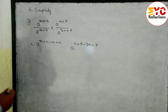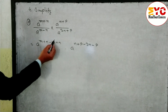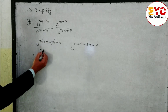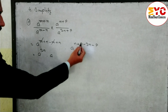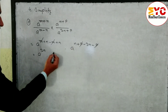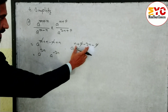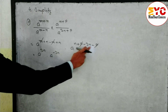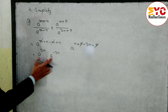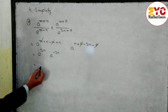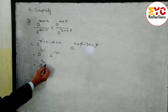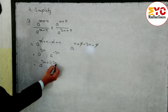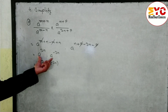Similarly this one — base same, in divide subtract the power. Write n+p, then minus 3n — since plus 3n becomes minus 3n — and minus p. After this, n and n cancel: remaining a power 2n. For the other part, p and p cancel; n minus 3n gives minus 2n. So we have a power 2n into a power minus 2n.